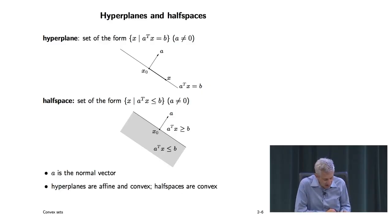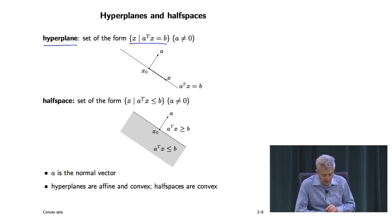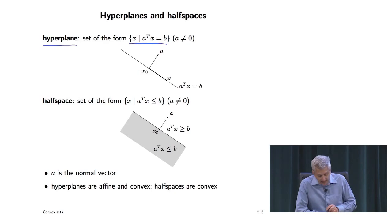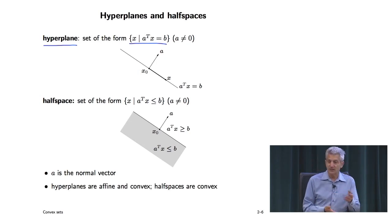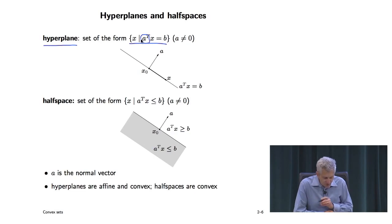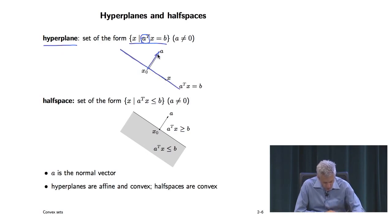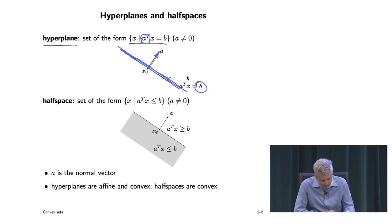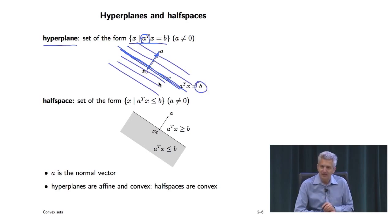A hyperplane is the solution set of a single linear equality constraint: {x | a^T x = b}, where a ≠ 0. In R^2 it's a line; in R^3 it's a plane — that's why it's called a hyperplane, because it's like a plane but in higher dimensions. The vector a is normal to the hyperplane. As you vary b, these are parallel planes.